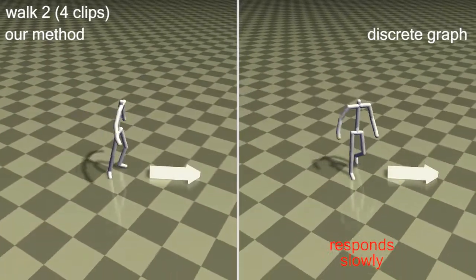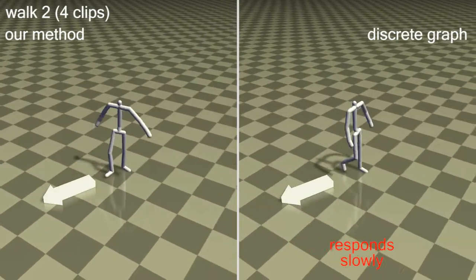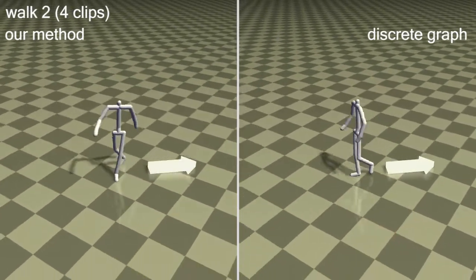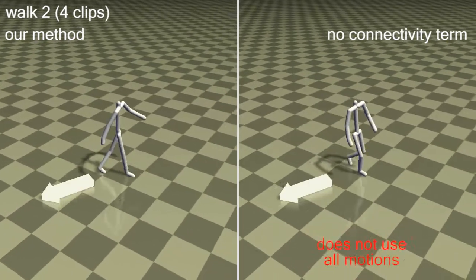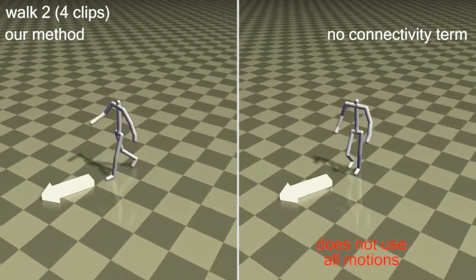With four examples, our method becomes even more agile compared to the discrete graph controller. But without the proposed connectivity term, it cannot utilize all available motions.